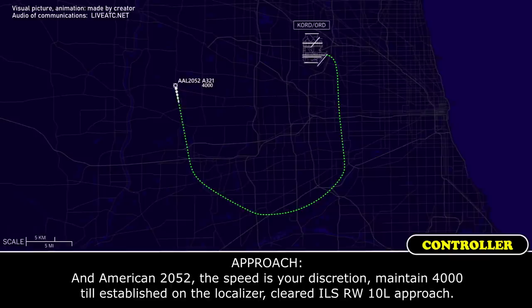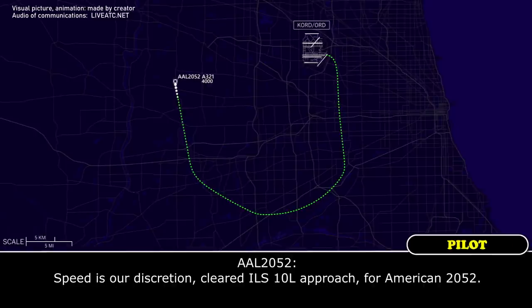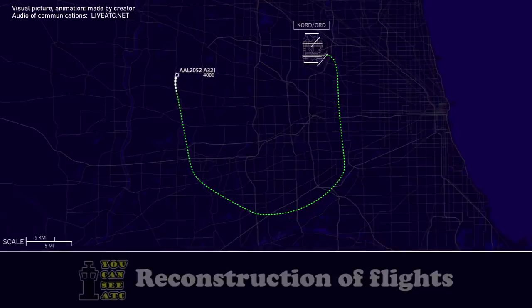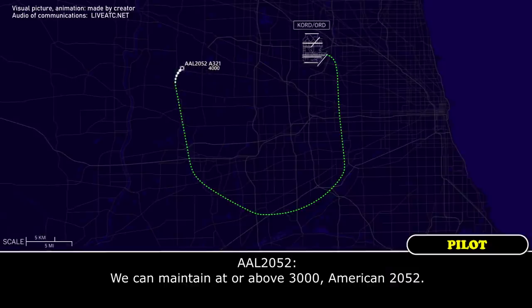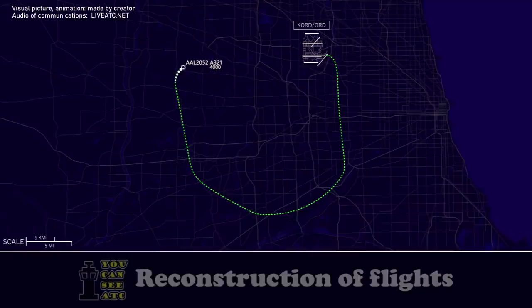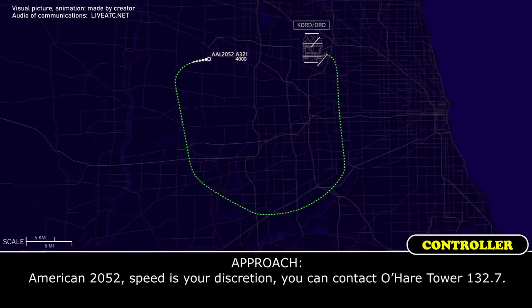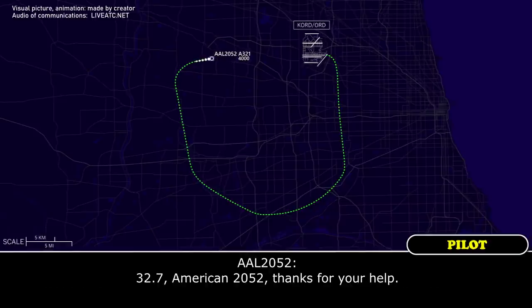American 2052, speed is your discretion, maintain 4,000 until established on the localizer, cleared ILS runway 10 left approach. Speed at our discretion, cleared ILS 10 left approach for American 2052. American 2052, maintain at or above 3,000 until established. You can maintain at or above 3,000 until established, American 2052. American 2052, speed your discretion, contact O'Hare Tower on 132.7. 132.7, American 2052, thanks for your help.